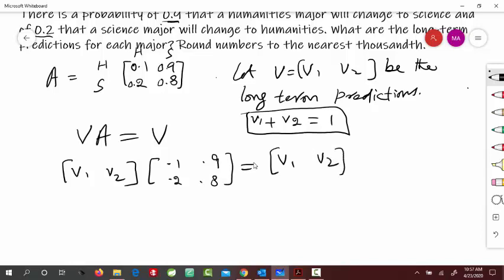So now the product on the left side, that would give me 0.1 V1 plus 0.2 V2, and 0.9 V1 plus 0.8 V2. And on the right side, we have the same V1, V2.